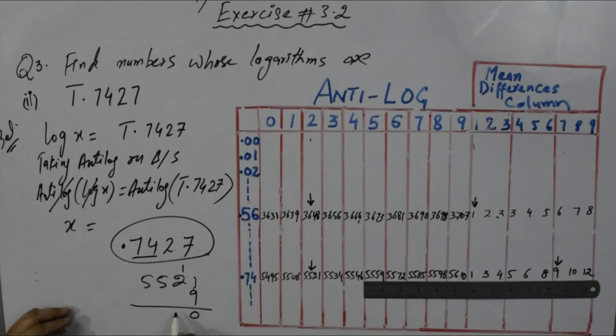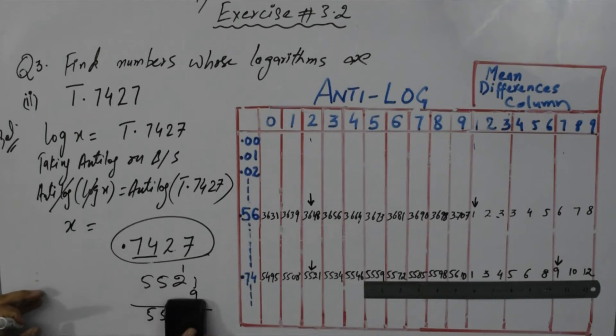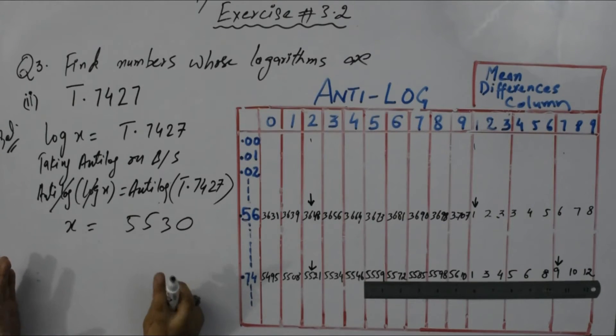Next number is 7 in mean differences column. Under 7 in front of 0.74, we get 9. My mantissa is 5530. This number from mantissa.